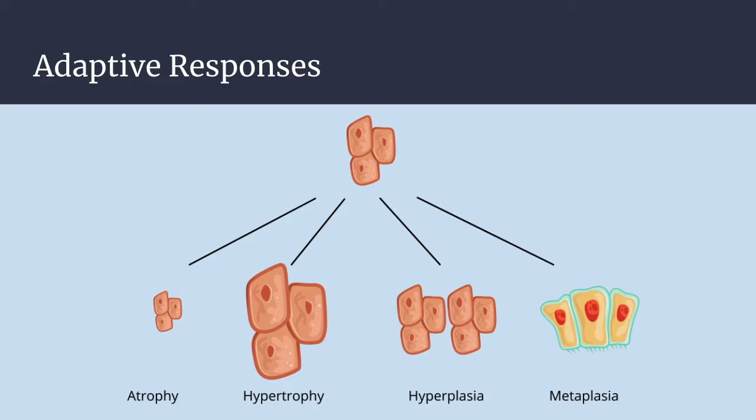The normal adaptive responses cells undergo are atrophy, hypertrophy, hyperplasia, or metaplasia. Keep in mind that if the stimulus for adaptation is removed, the cell will return back to its baseline state. For example, after summer when you're tanned, once winter comes and there's no more sun, your skin reverts back to its normal shade.